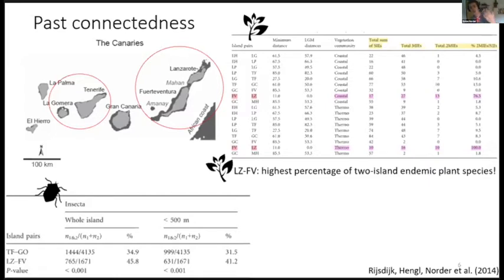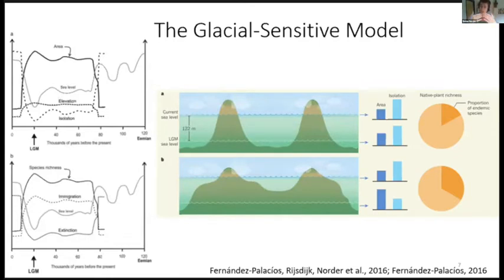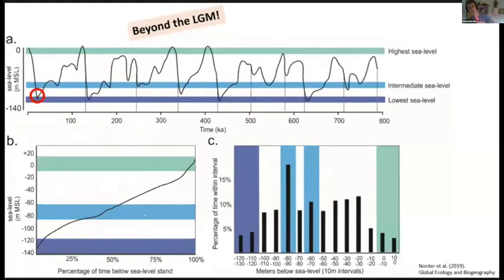They came up with the 'Glacial Sensitive Model' to explain this. The basic proposal: islands that did not change much in size as a result of sea level fluctuations and were never connected will have a smaller proportion of endemic species compared to those that were connected to other islands or were much larger in the past. They were interested to study how sea level fluctuations over time affect modern biodiversity. To do this, they first had to quantify how islands change over time. Sietze developed a script to do these calculations at the global scale — it's published with the paper and can be downloaded and run for your own data.